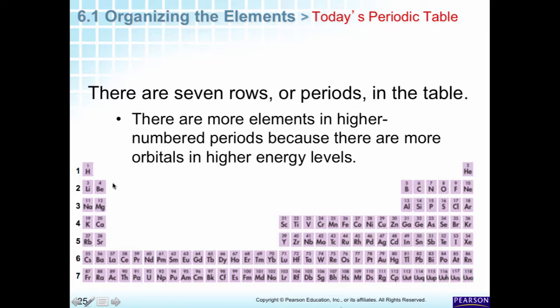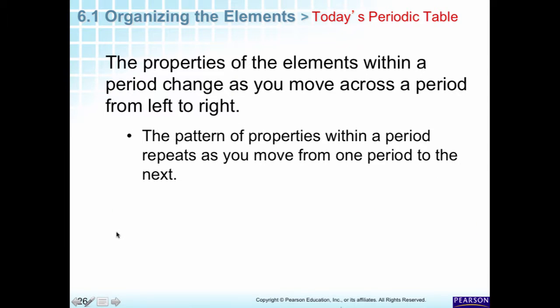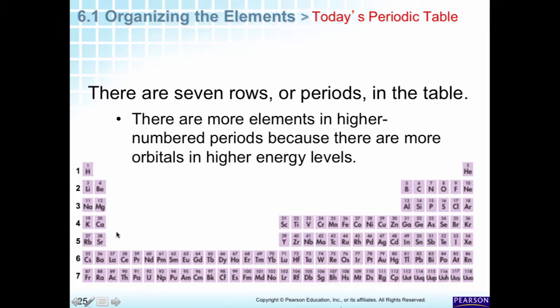There are 7 rows — we call these rows periods. Notice that towards the bottom of the table there are more elements in each row, because we're adding more types of orbitals: first D's, then F's.